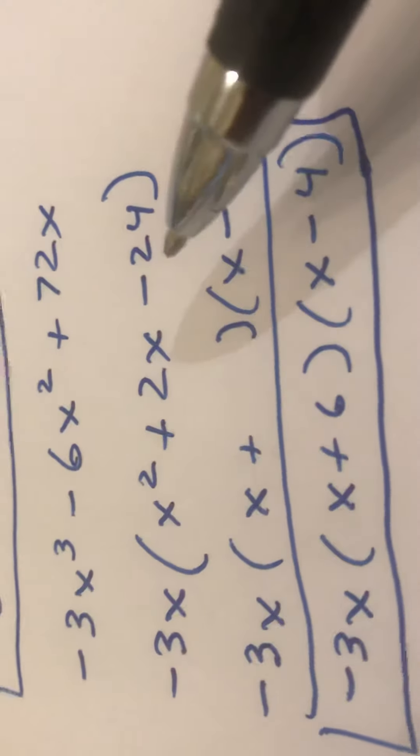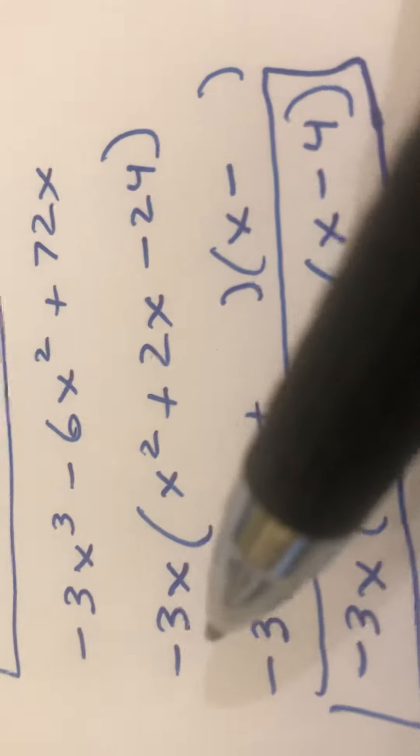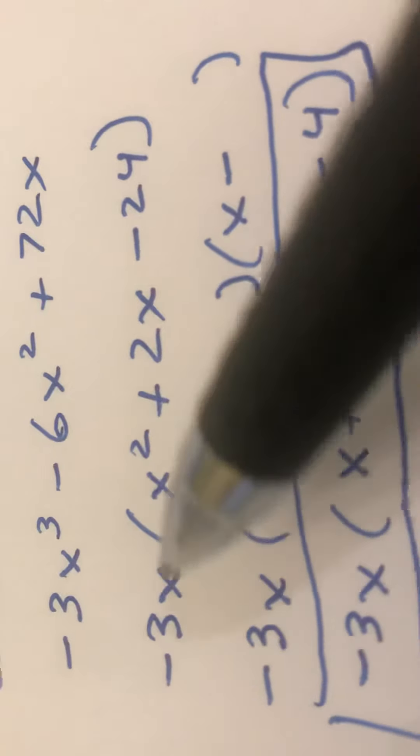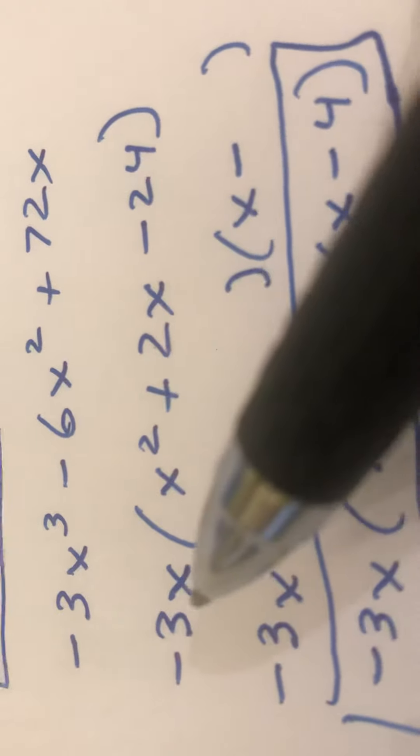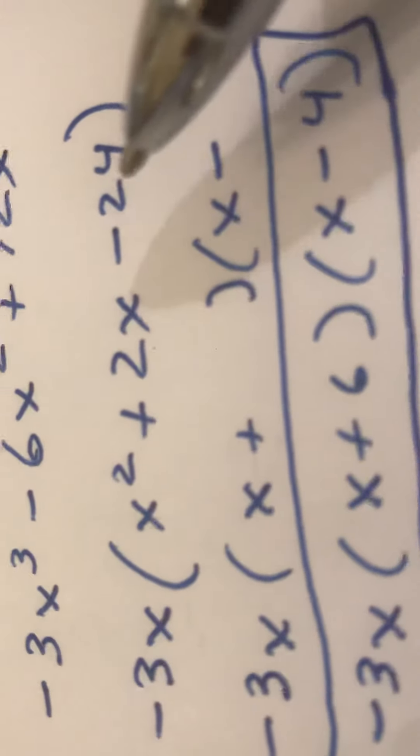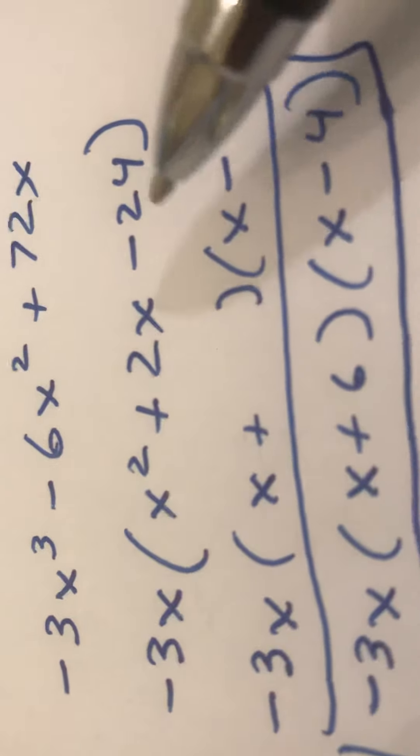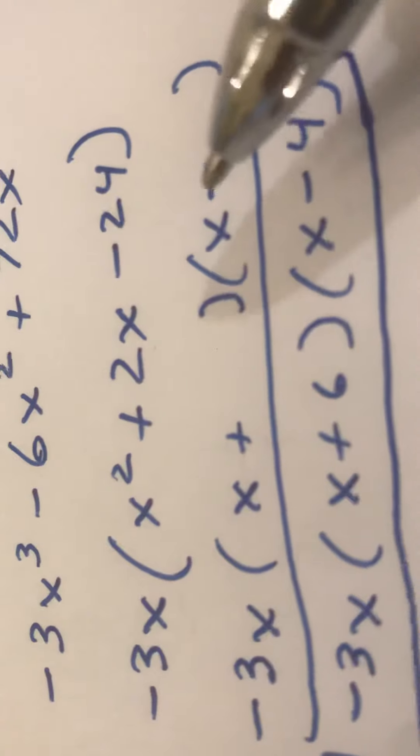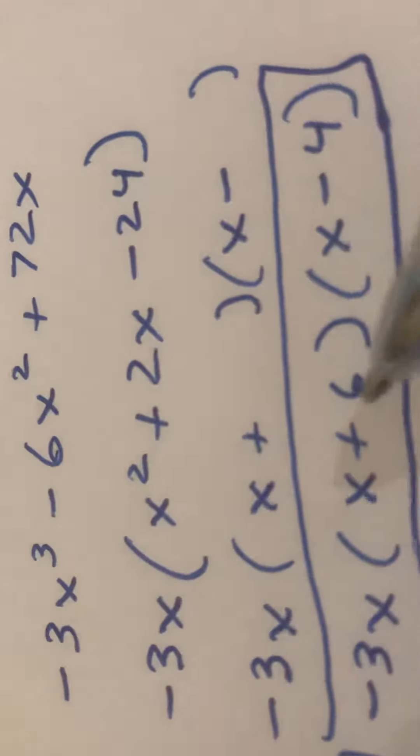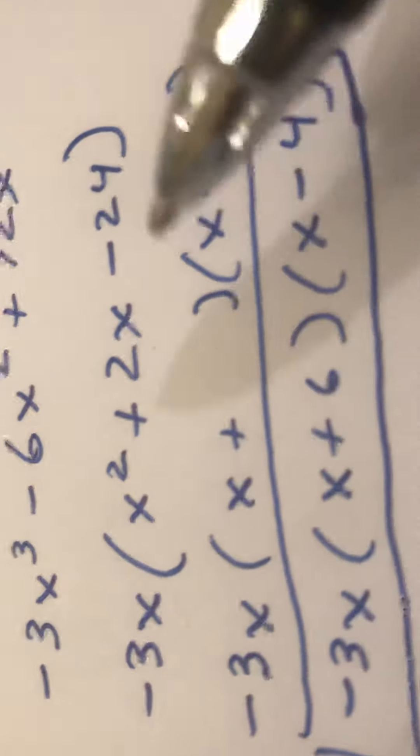plus 2x minus 24. Especially when you take a negative, it's good to multiply it back out: negative 3x cubed, negative 6x squared, and positive 72x. Once again the last term is negative so I know I'm gonna have a positive and a negative. The middle term is positive so I know the larger number is gonna go positive.